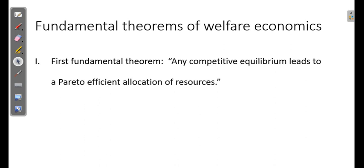Now what the fundamental theorem says is that any competitive equilibrium leads to a Pareto efficient allocation of resources. What it implies in simple words is that in a perfectly competitive market structure, whenever there is a market which is perfectly competitive and there is an equilibrium in that competitive market structure, then there would always be a Pareto efficient allocation of resources in such market.